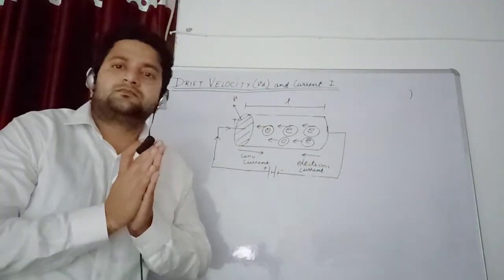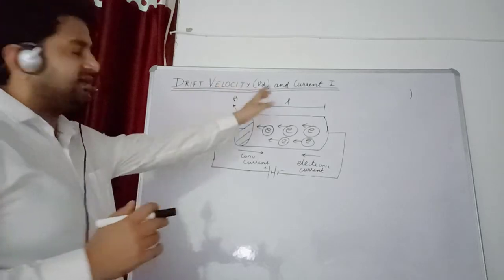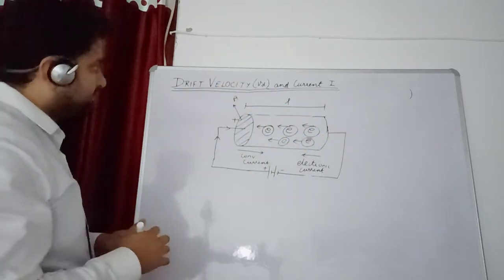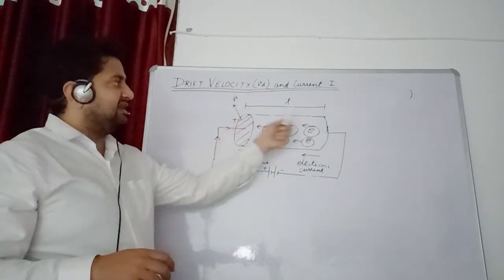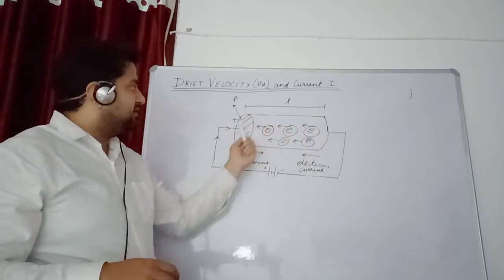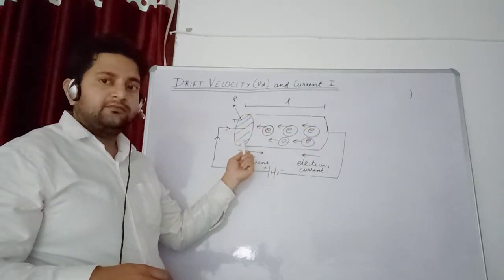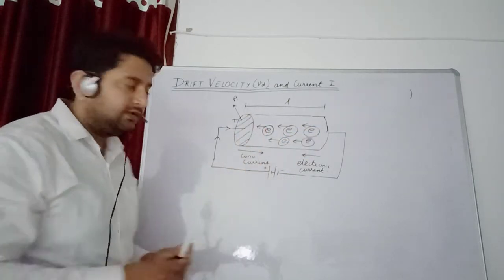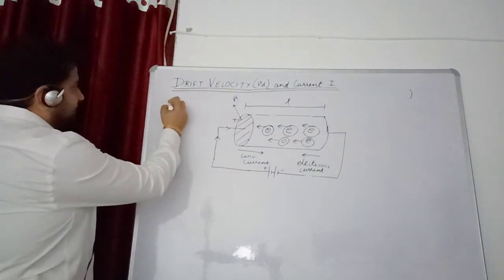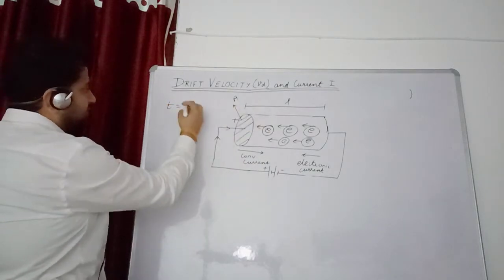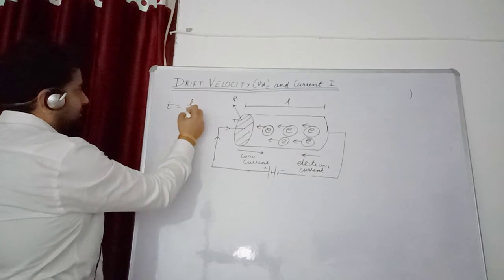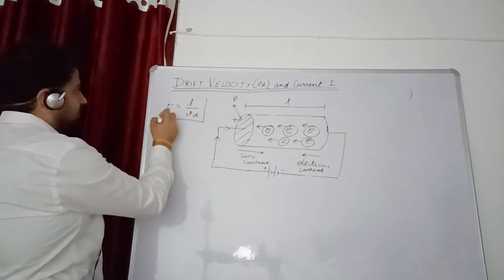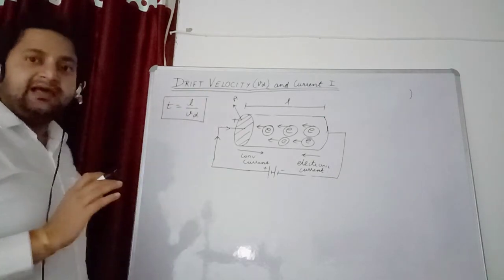So this is a very important formula for drift velocity. Now we will try to find out some relation between drift velocity and current. Let us suppose this is the conductor having length L and area of cross section A. Vd is drift velocity. Now we know that time period equals distance upon velocity, that is L upon vd.